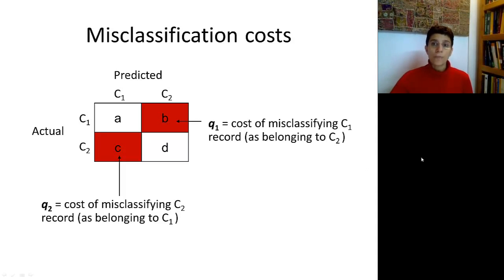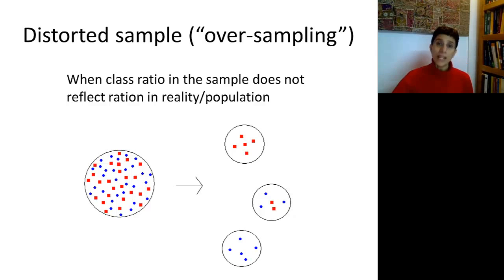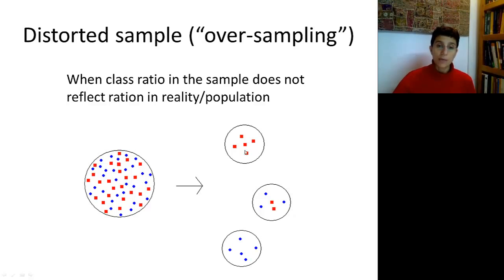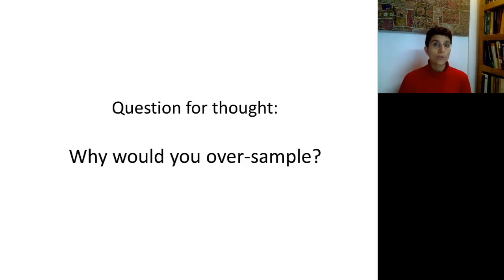Let's look at the other scenario we can include directly into the algorithm: oversampling, or a distorted sample. What we mean is that the ratio of classes — say the acceptors and the non-acceptors in the sample — does not reflect or correspond to that ratio in the population. In this diagram, you can see different samples where the ratios do not correspond to the same ratio of red to blue in the entire population. Stop the video and try to think of practical reasons why you would intentionally oversample.